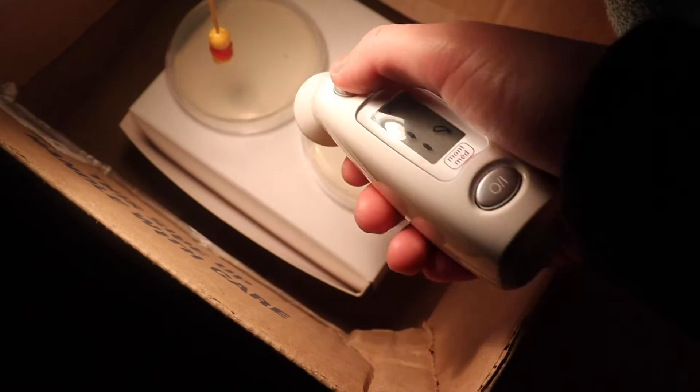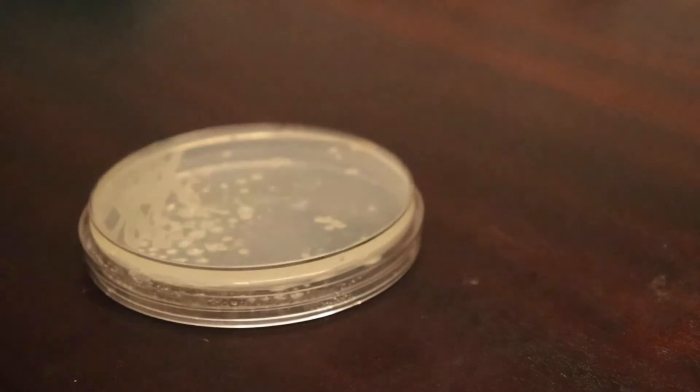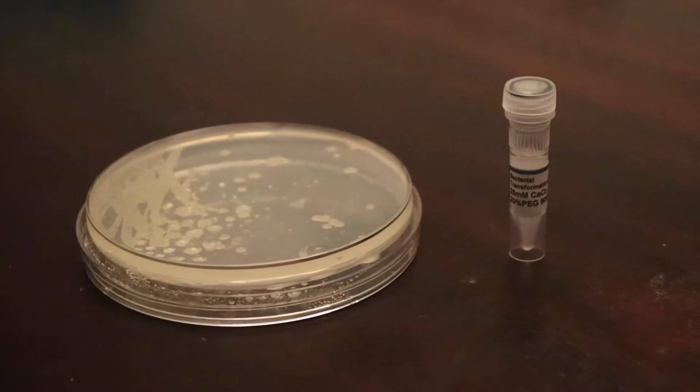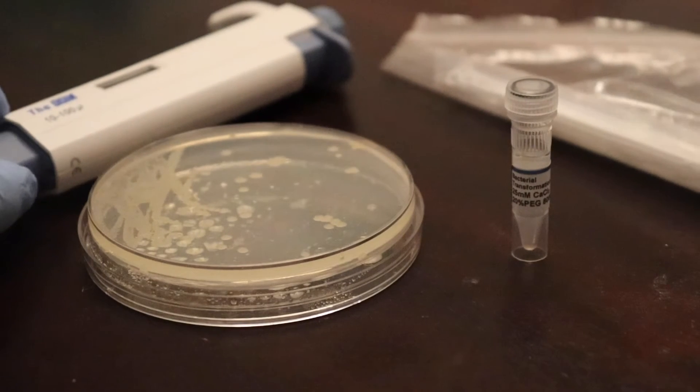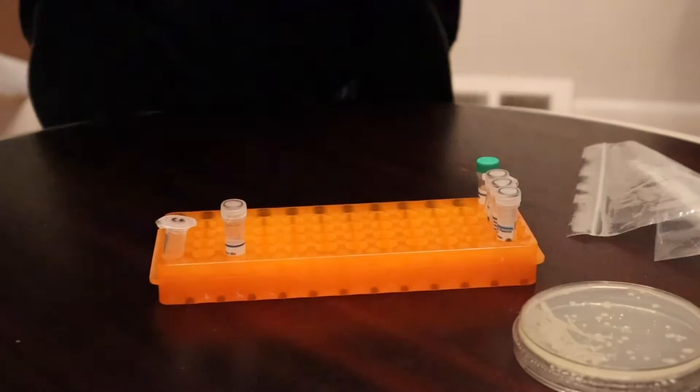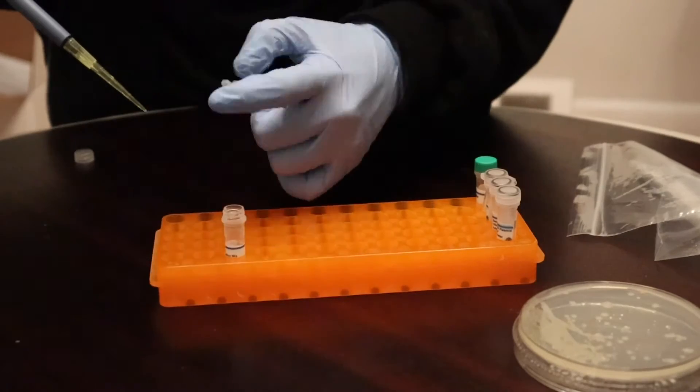Now we'll be making our bacteria competent, meaning that it'll be able to intake foreign DNA. To do that, we'll be taking our freshly grown bacteria and mixing it with PEG8000 and calcium chloride. Fun fact: PEG8000 is actually what they use in COVID mRNA vaccines. First, pipetting some of the calcium chloride and PEG8000 into an empty microfuge tube.